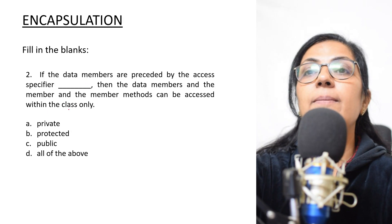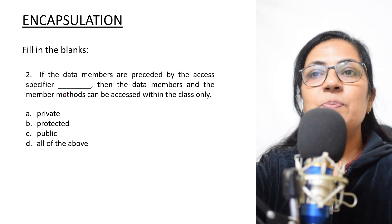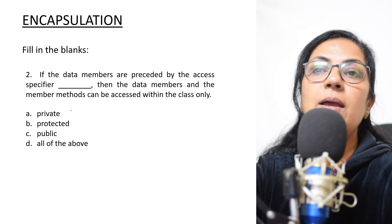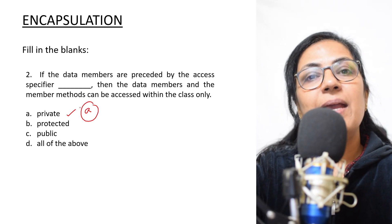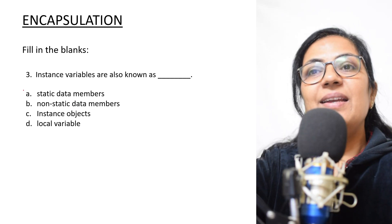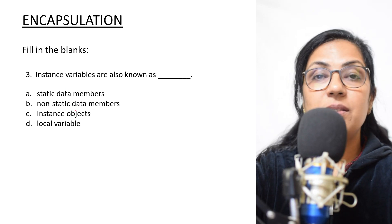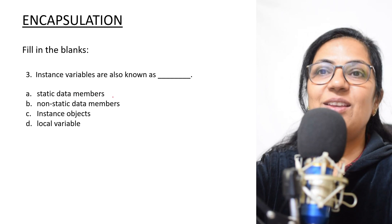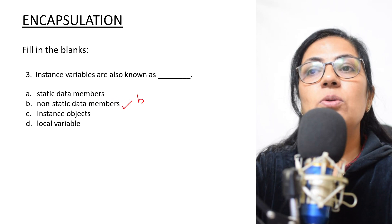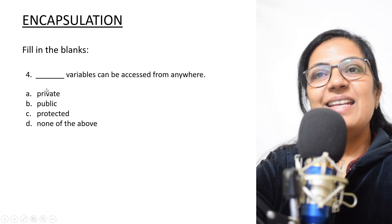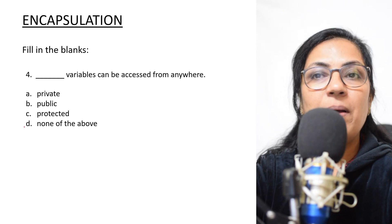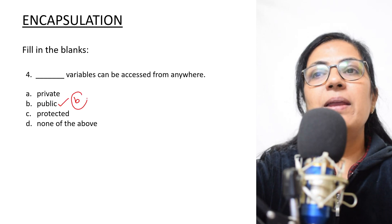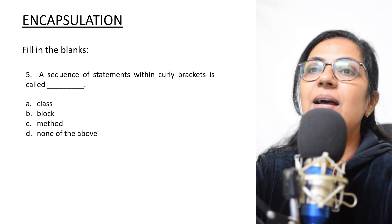'If the data members are preceded by the access specifier dash, then the data members and member methods can be accessed within the class only.' Options: private, protected, public. The answer is private — only then can it be accessed within that class itself. 'Instance variables are also known as...' — non-static data members. 'Dash variables can be accessed from anywhere' — public variables can be accessed from anywhere. 'A sequence of statements within curly brackets is called a block.'